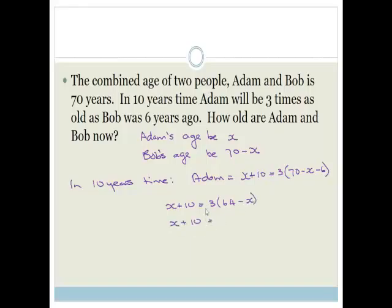X plus 10 is equal to 3 times 64, which is going to be 3 times 4 is 12, carry 1, 6 times 3 is 18, that's 192 minus 3X.